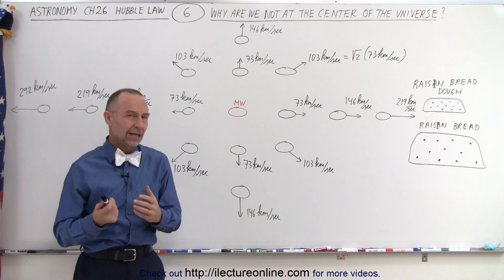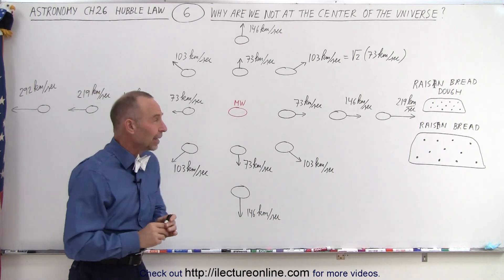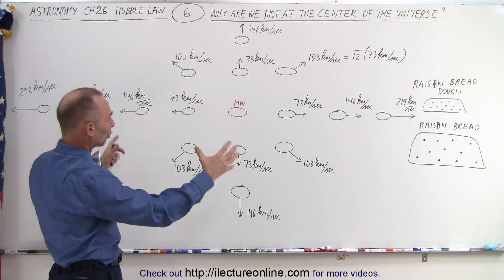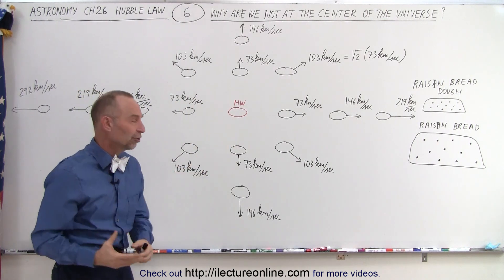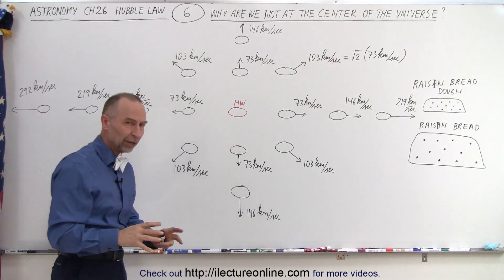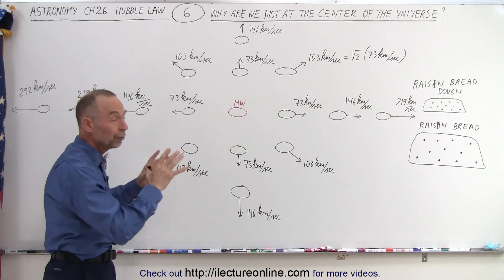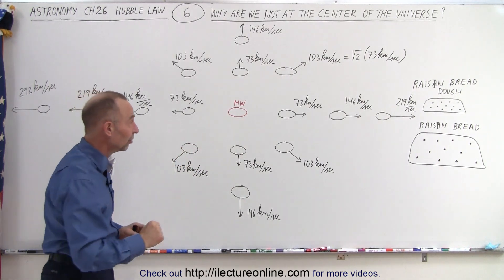But of course, it didn't take long to realize that that was not the right way to think about it. So anyway, let's try to figure that out. Here we have a pictorial of what it looks like from our vantage point. Here's our Milky Way galaxy. This is where we live. We live in one of the spiral arms of the galaxy. And as we look around in every direction, we see galaxies moving away from us proportional to their distance.